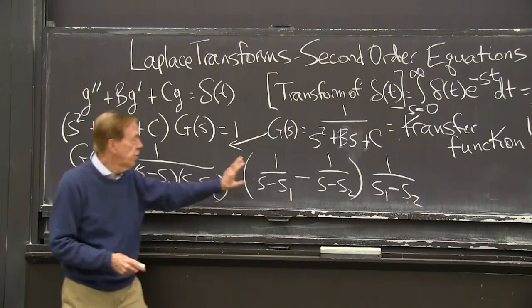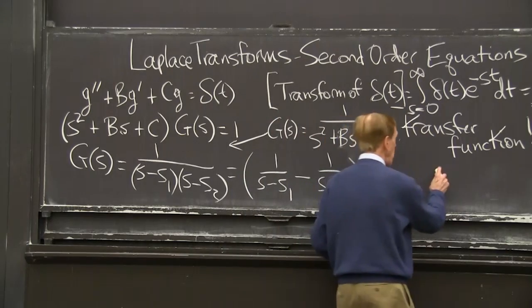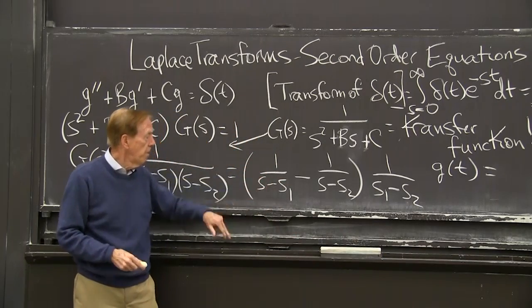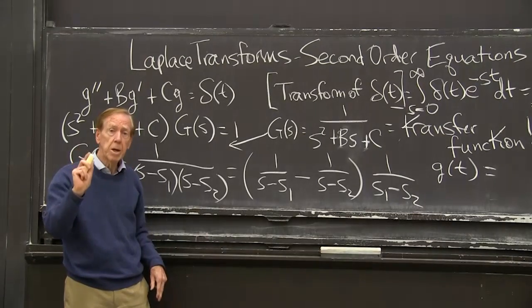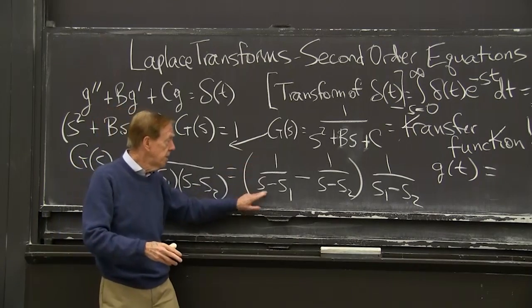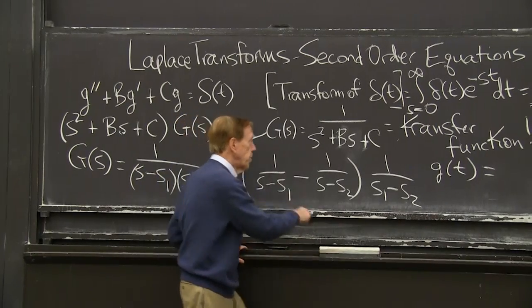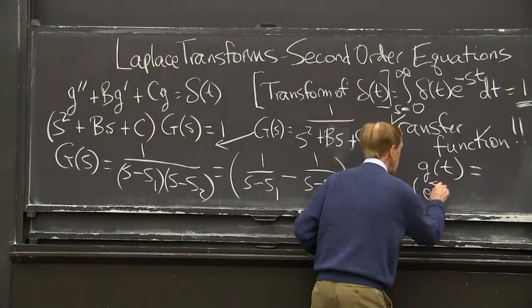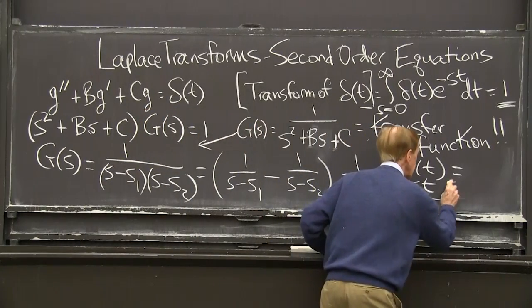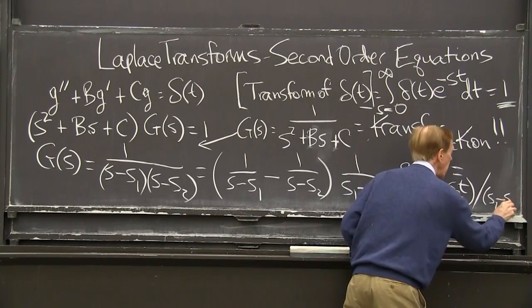So then, now I have two simple poles. And I can write here what I know g of t is. Remember, the function with that transform is just e to the s1t. The one most important of all transforms is the transform of the exponential is that simple pole. So now I invert the Laplace transform. This gives me an e to the s1t minus the function with that transform is e to the s2t.